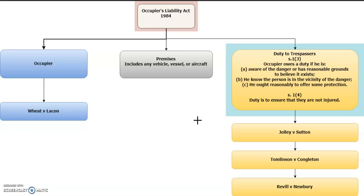The 1984 Act was designed to cover situations where a duty of care might be owed by an occupier to a trespasser. If you remember, the 1957 Act is all about the duty owed by an occupier to people that are lawfully entitled to be on the premises, whereas the 1984 Act is designed for trespassers.